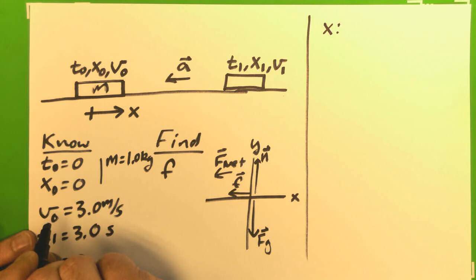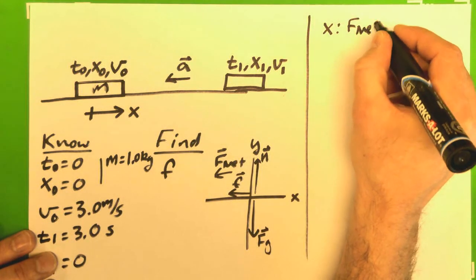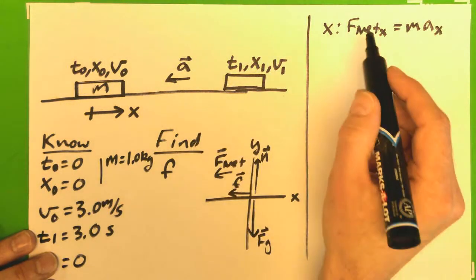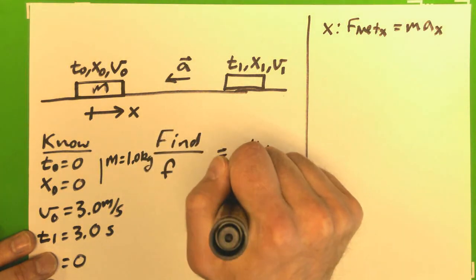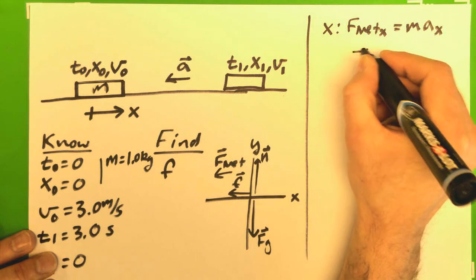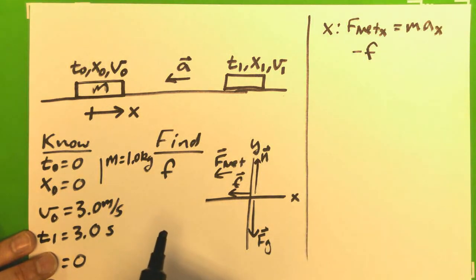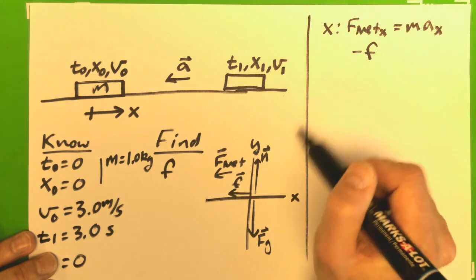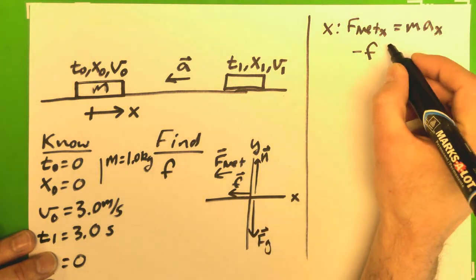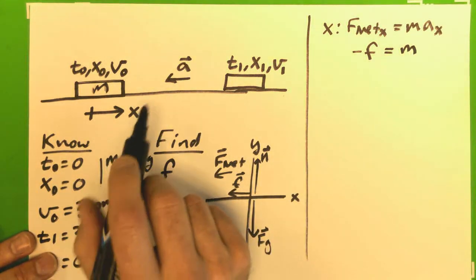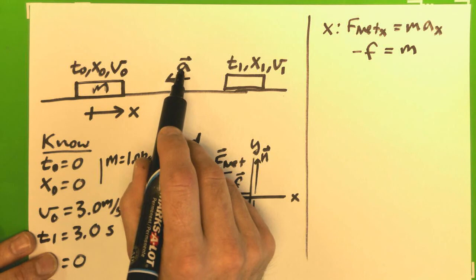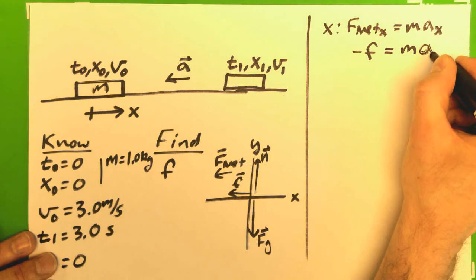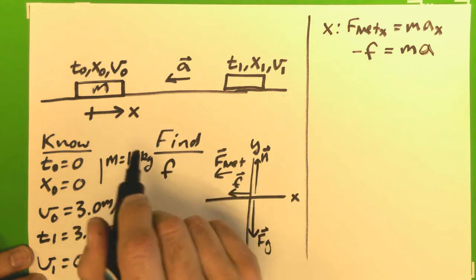So, I'm going to write F net x equals m a x. And I know that my F net is only this way, and so that is going to be my frictional force, and it is negative. It is negative. And so, my magnitude, I write as this variable, and I apply the minus sign here, and that is consistent. So, now I can write equals m a x. Now, I don't know my a, but I'm going to try and find that later. So, I'm just going to write a here. So, my ax, I've put a because that's how I have a label. There's no y component.